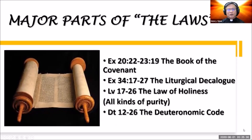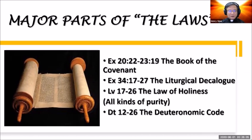If you turn the pages of these five books, you'll find some major sections of the law. In the book of Exodus, you have a number of chapters on the book of the covenant, including what is known as the Ten Commandments, and then in chapters 34 to 36, the liturgical decalogue. In Leviticus, a number of chapters on the law of holiness — all kinds of purity they should maintain. And in the book of Deuteronomy, you have the Deuteronomy code, some of which repeats Exodus and some unique to that book.